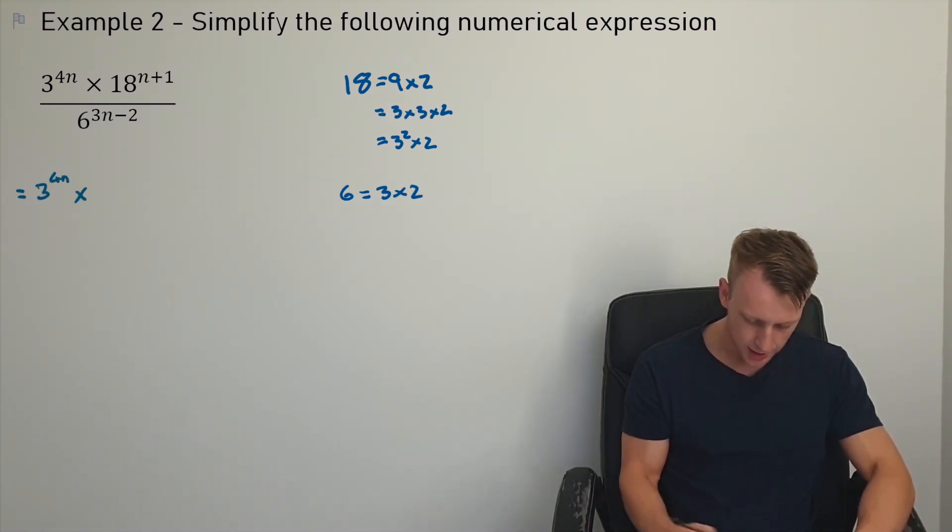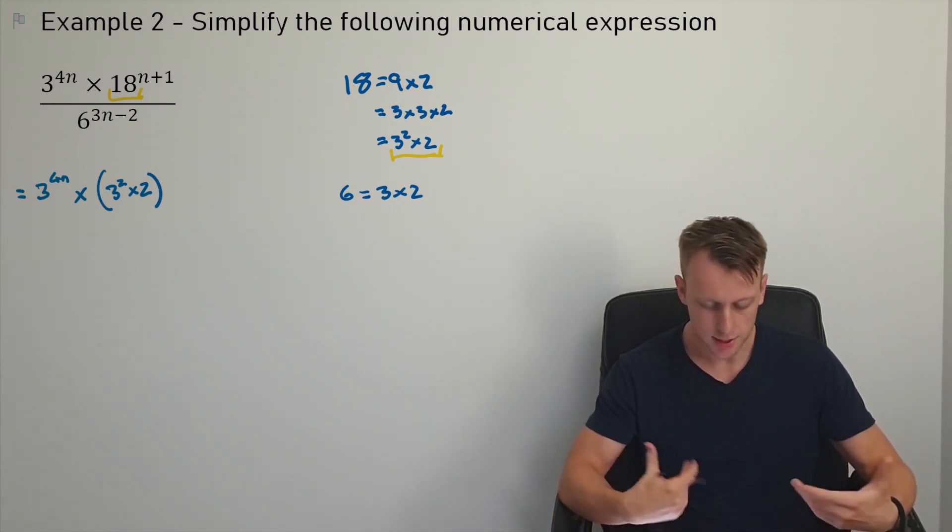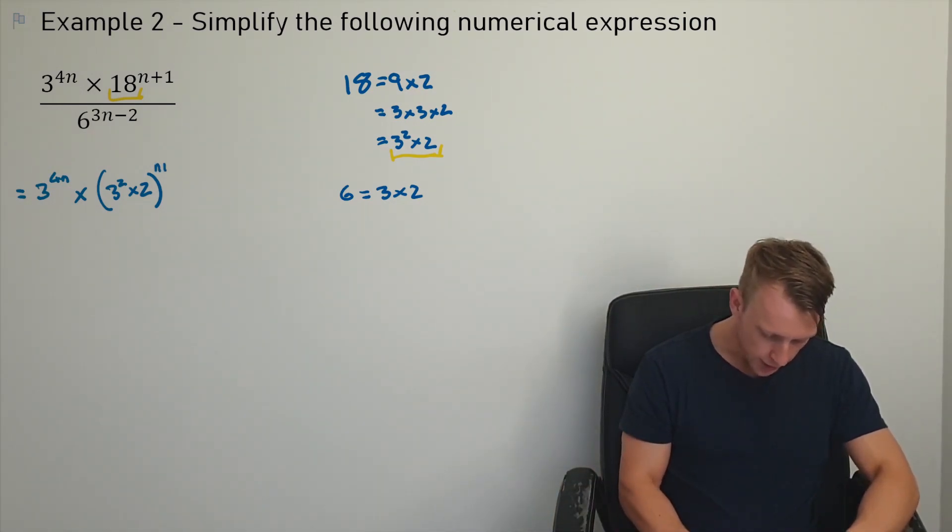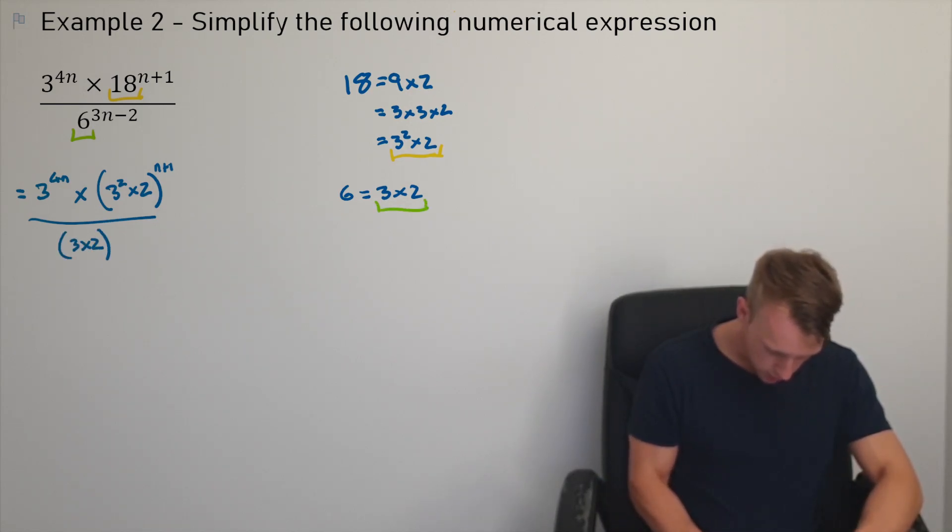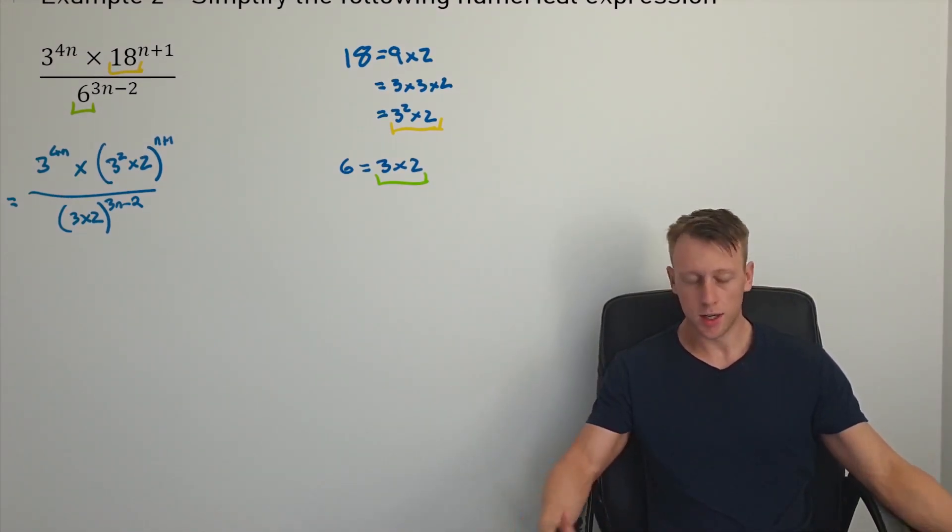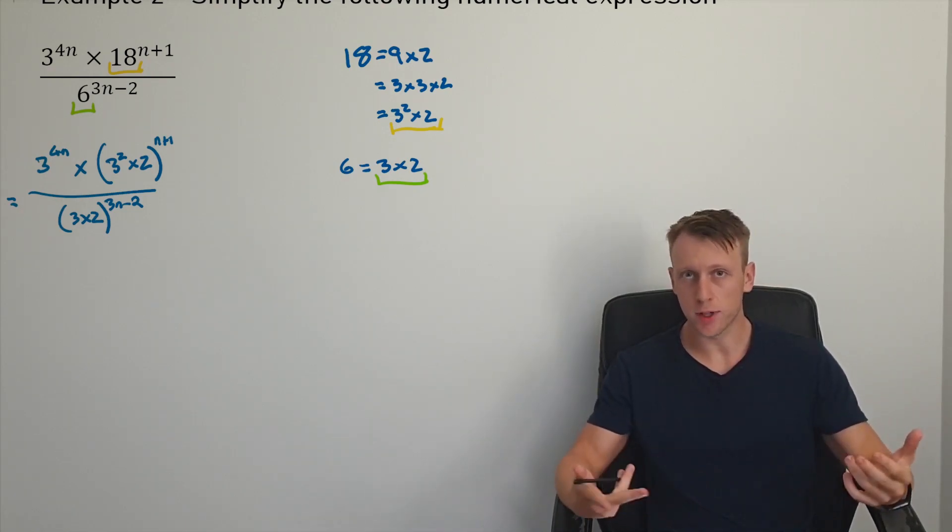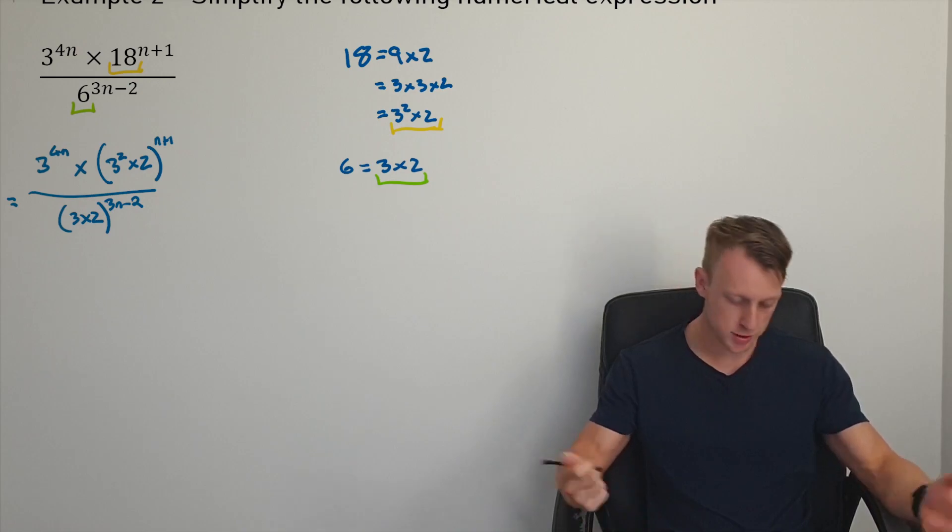So instead of writing 18, I'm going to write 3 squared times by 2. Instead of writing 18, I'm going to write 3 squared times by 2, because it's the same thing. I'm just getting the base numbers to be the same. All to the power of n plus 1, over, and instead of 6 here, I'm going to have 3 times 2. And then here I see two terms, one on the numerator, one on the denominator, with some brackets. I'm just going to simplify it out using the same index laws as we used in the first example.